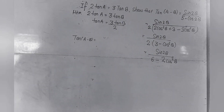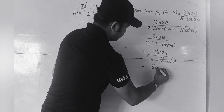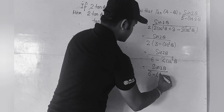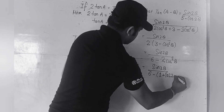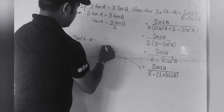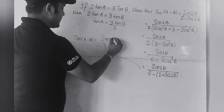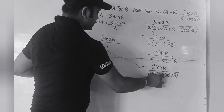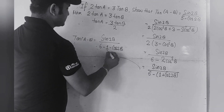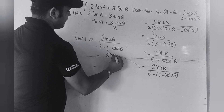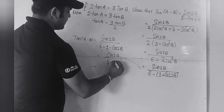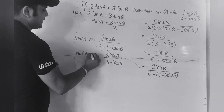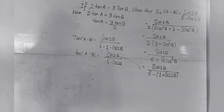So we have sin2B in the numerator. In the denominator: 6 - (1 + cos2B). Removing the bracket: 6 - 1 = 5, giving 5 - cos2B. Finally, tan(A-B) = sin2B / (5 - cos2B). This is our solution.